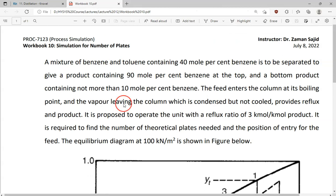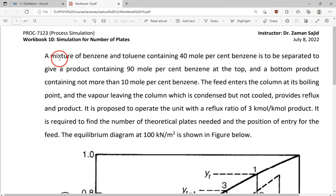Let's go to this example, which is workbook 10 in our class. It says that a mixture of benzene and toluene containing 40 mole percent benzene is to be separated to give a product containing 90 mole percent benzene at the top and a bottom product containing not more than 10 mole percent benzene. The feed enters the column at its boiling point and the vapor leaving the column, which is condensed but not cooled, provides reflux and product. It is proposed to operate the unit with a reflux ratio of 3 kmol per kmol product. It is required to find the number of theoretical plates needed and the position of the entry for the feed.